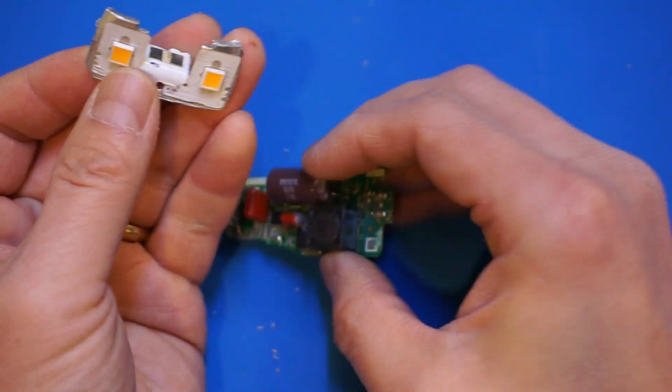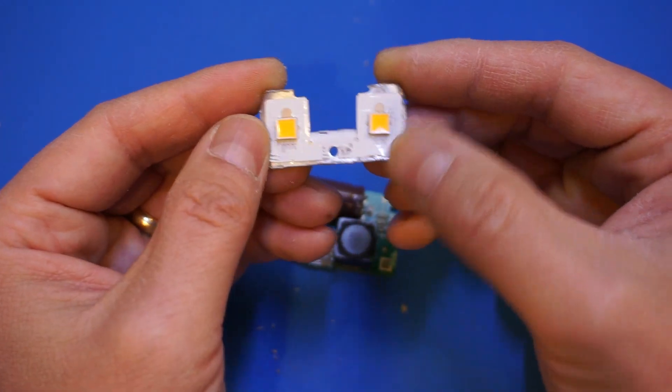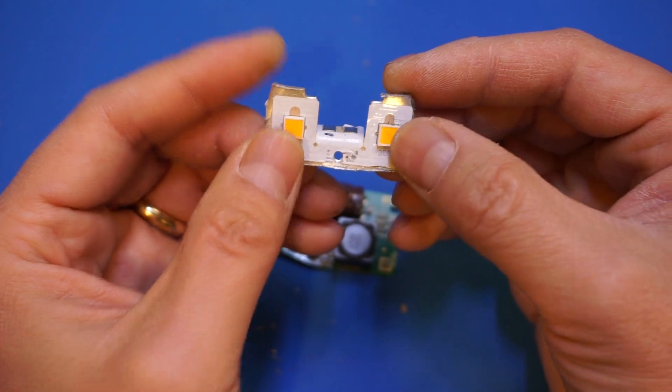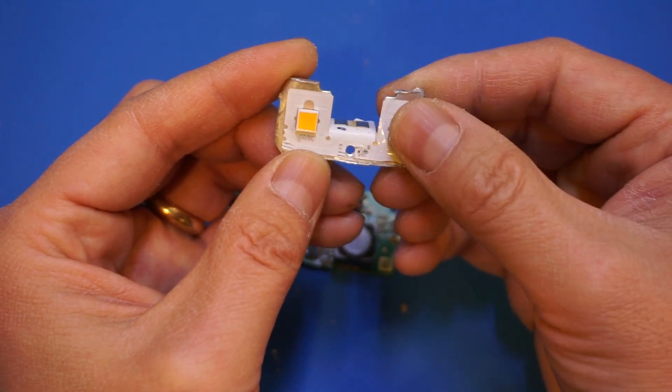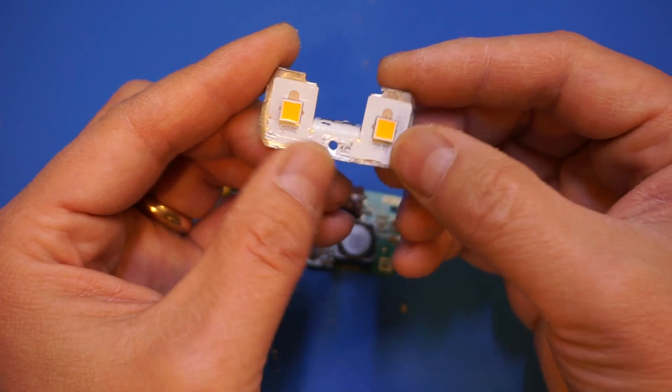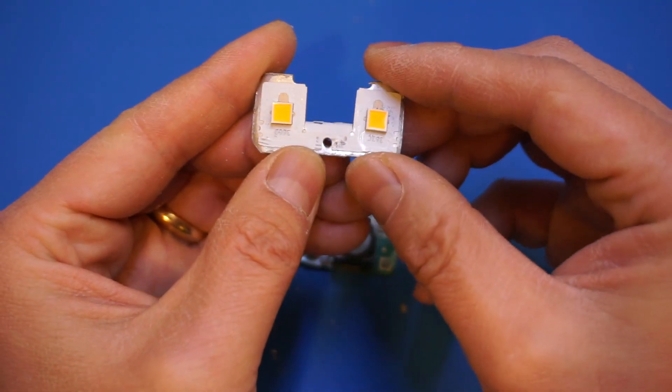But disappointingly, the chip itself, the LED chip itself is still susceptible to heat. And clearly the failure mode of this Cree LED is the same as that of many different LEDs. Basically they started to flicker because the LED chip is overheated.